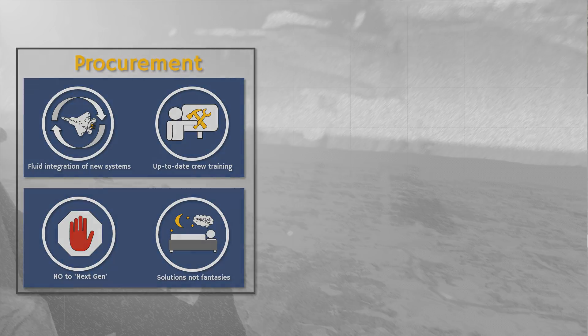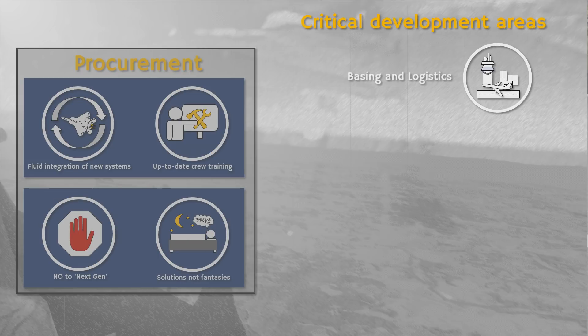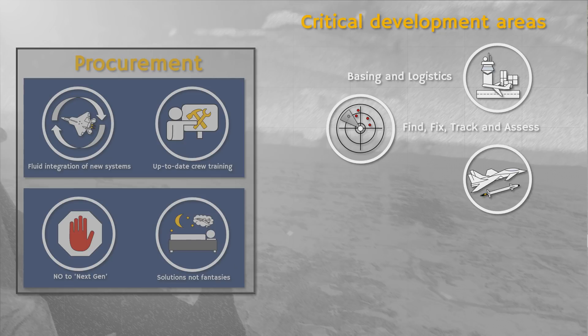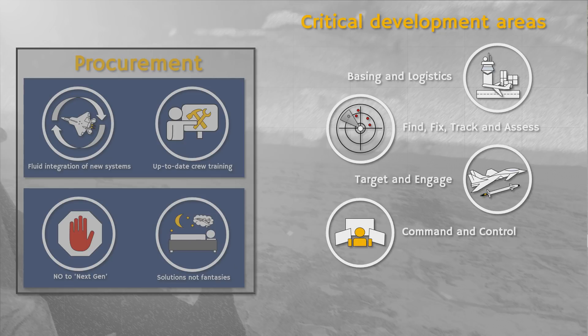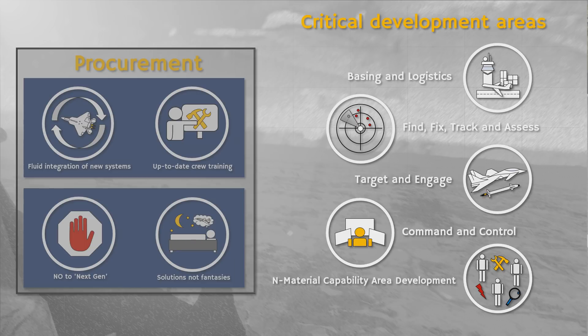Beyond this, Air Superiority 2030 sets out five major areas that require further development so that the United States Air Force can keep its competitive edge. These are: Basing and Logistics; Find, Fix, Track, NSS; Target and Engage; Command and Control; and Non-Material Capability Area Development. We will now go over some key points of each critical development category.